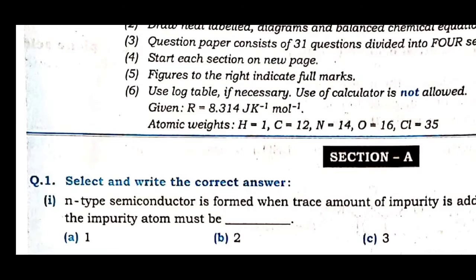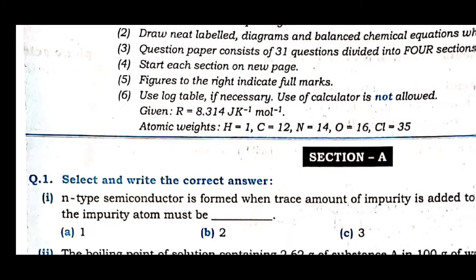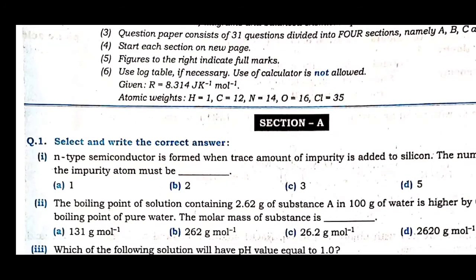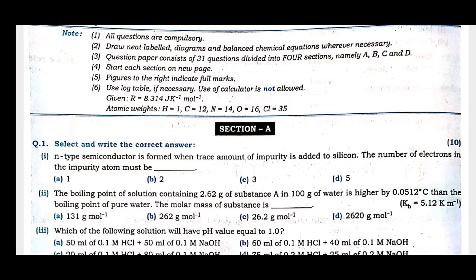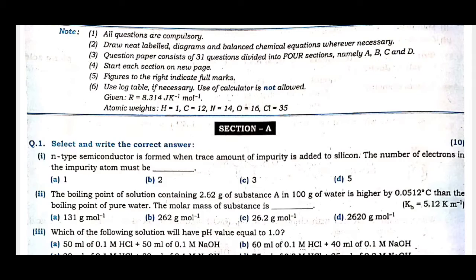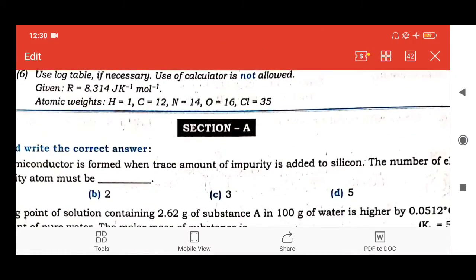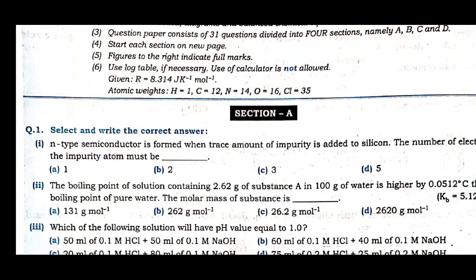The first MCQ is on n-type semiconductor. N-type semiconductor is formed when trace amounts of impurity are added to silicon. The number of electrons in the impurity atom must be determined. For n-type semiconductor, a group 15 element is taken where the valence electron count is 5. For p-type semiconductor, a group 13 element is doped into the group 14 element, giving 3 valence electrons. So for n-type, the valence electron count is 5 — option D. This question is from solid state.